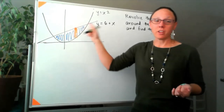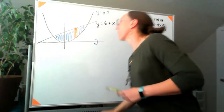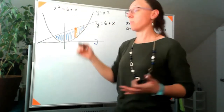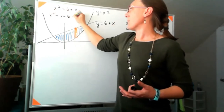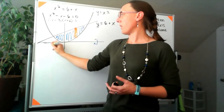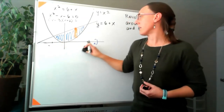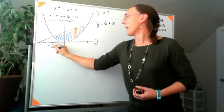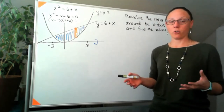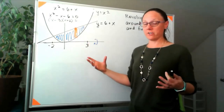We have a choice of where to start, but I know eventually I'm going to need those limits of integration, so I might as well figure out where they intersect. Setting x² equal to 6 + x, I tried to give us something that would factor. So x² - x - 6 factors as (x - 3)(x + 2), which means we have intersections at x = -2 and x = 3. Because what I'm rotating around does not touch exactly one edge of this shape, when I spin it we're going to get something with a hollowed-out part.